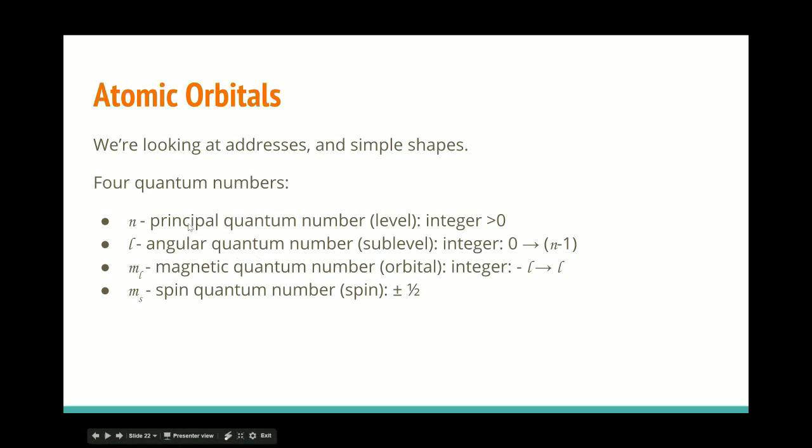It's called the principal quantum number. L is the angular quantum number. It talks about the angular momentum of the electron. Don't worry too much about that. But it is an integer that goes from zero to n minus one.